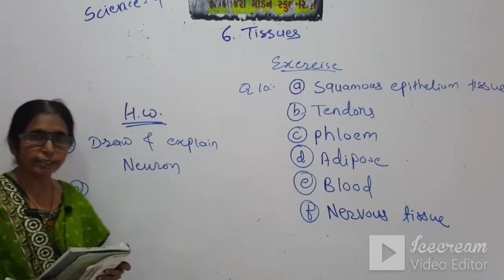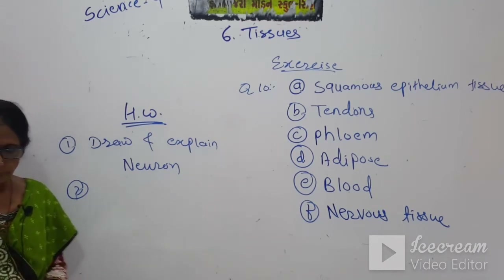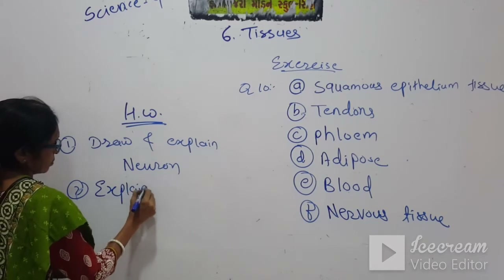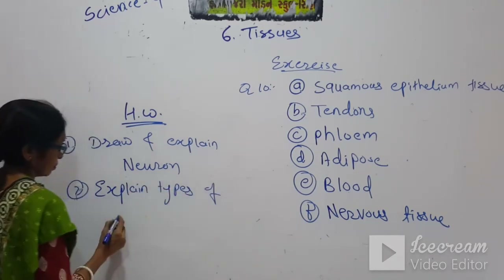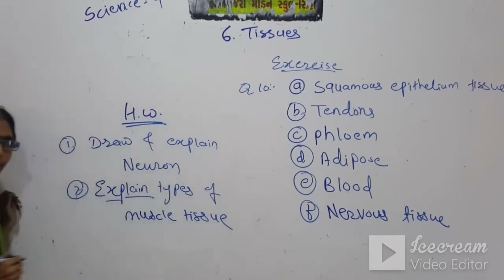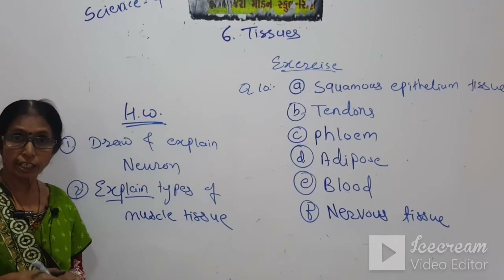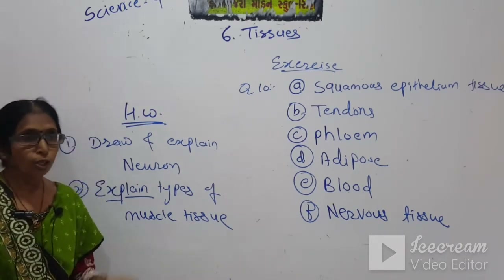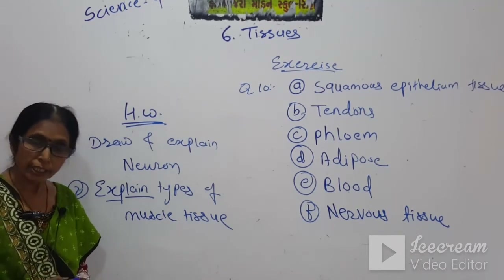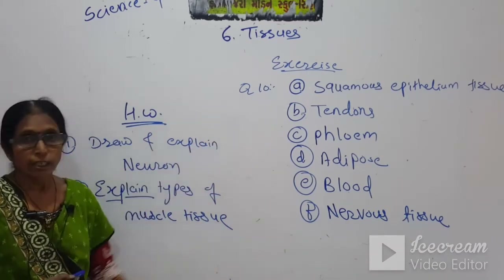For homework: draw and label the neuron — dendrites, cell body, nucleus, and axon. Number two: explain the types of muscle tissue — you have to write the characteristics: long, cylindrical, multinucleated or uninucleated, and whether voluntary or involuntary actions are done by it. Write the exercise from page 75 in your fair book. We have finished this chapter and will meet in the next video with a new chapter.